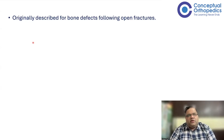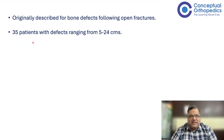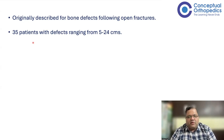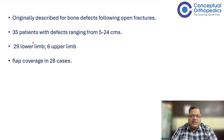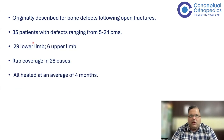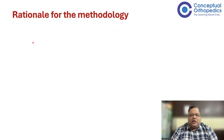What Masquelet originally described was treatment of open fractures with bone defects — whenever there is an open fracture with bone loss, this technique was employed. In his original series of 35 patients, bone loss ranged from 5 centimeters to 24 centimeters, covering both upper and lower limb. Flap coverage was used in 28 out of 35 patients, and he reported a 100% success rate at four months — a remarkable result, particularly for defects as large as 24 centimeters.